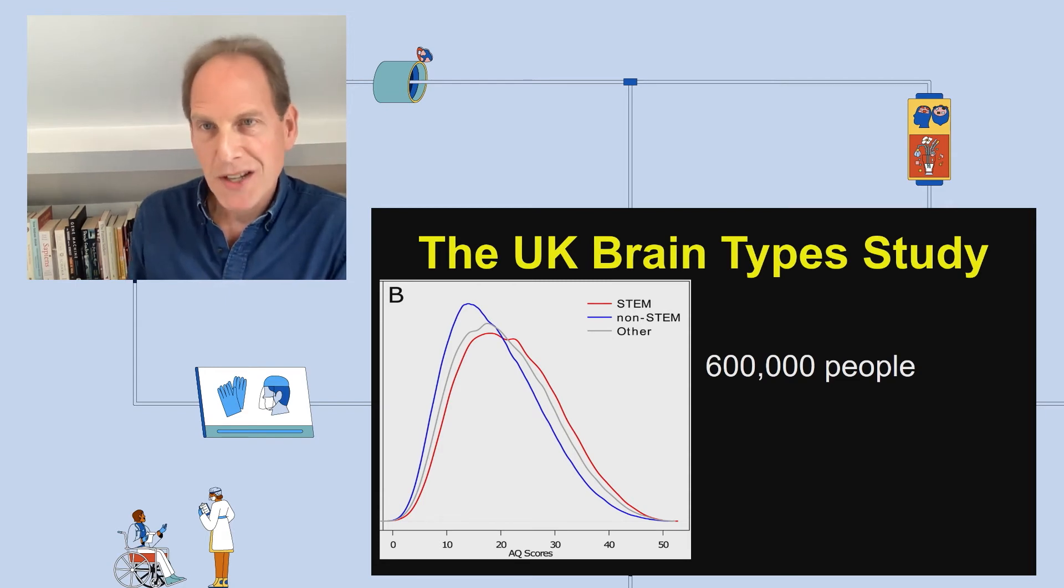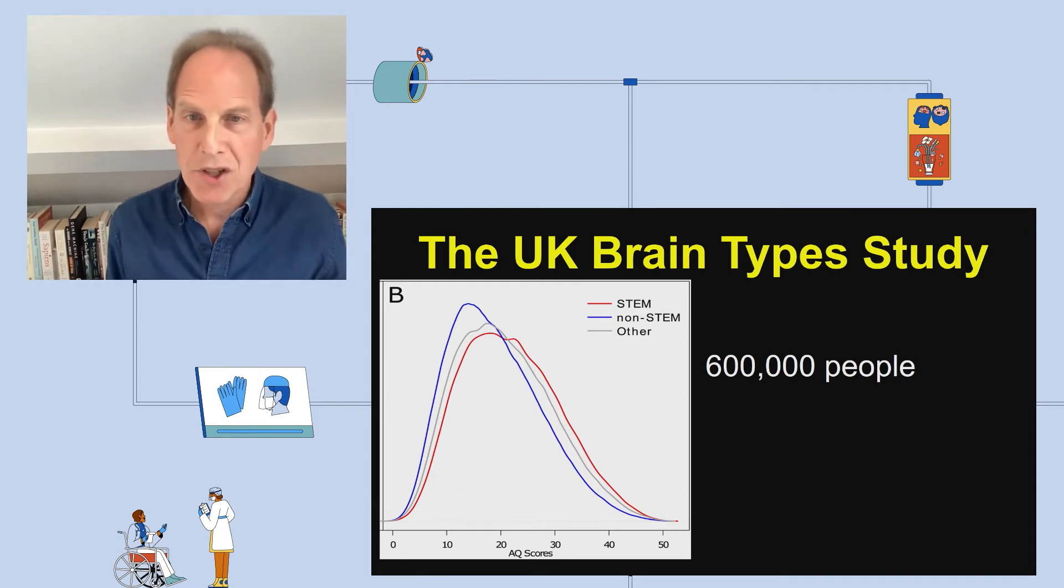So we've done some research. We looked at 600,000 people in the general population and we measured their autistic traits using a questionnaire called the AQ, or the Autism Spectrum Quotient. And we found that those people who worked in STEM—science, technology, engineering, or mathematics—on average had more autistic traits than those who did not work in STEM. So this shows a clear link between aptitude in understanding systems and higher levels of autistic traits.